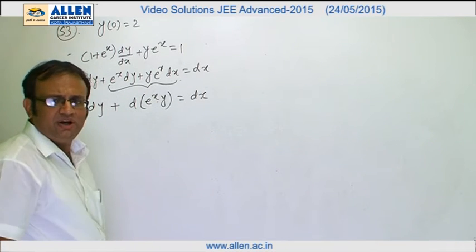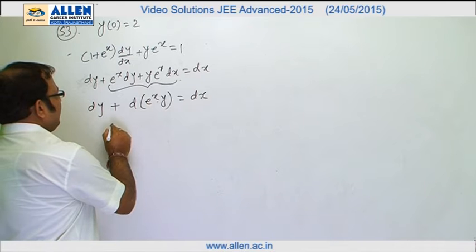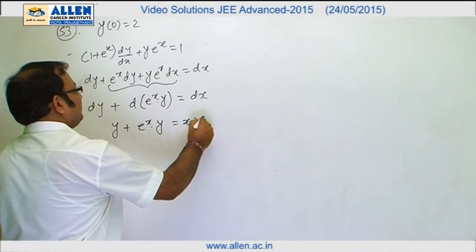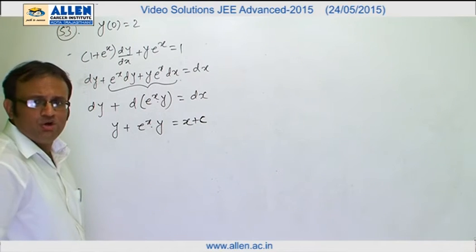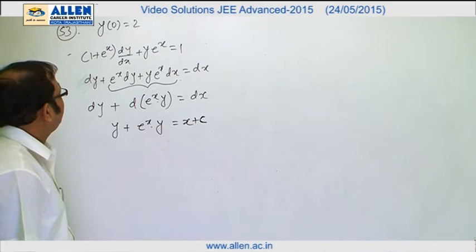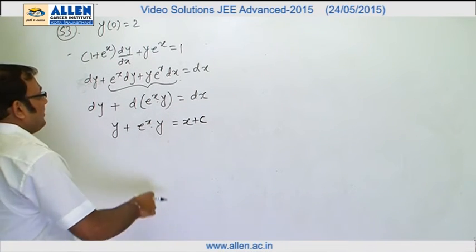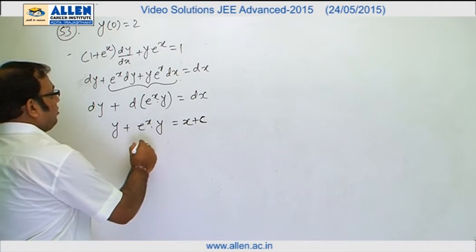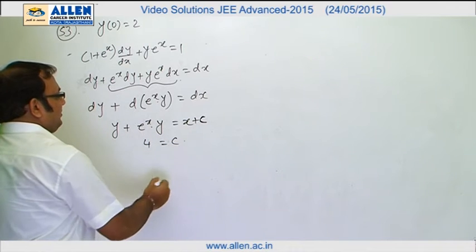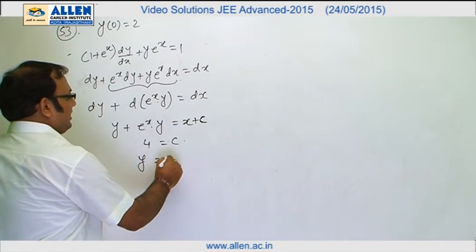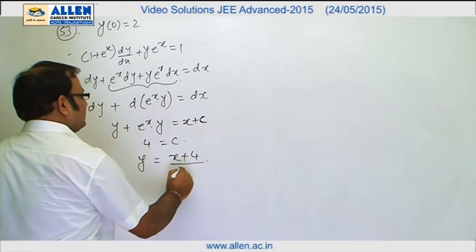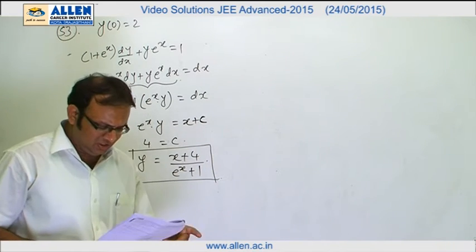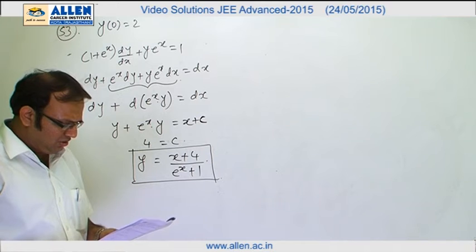Now we just have to integrate it to get the desirable function. So if you integrate it, this is y + e^x·y = x + c. To get the value of c, we are basically provided with the initial condition y(0) = 2. So in place of x we put 0 and in place of y we put 2, so here you will have 4 as c. That means your y = (x + 4)/(e^x + 1). This is the function.